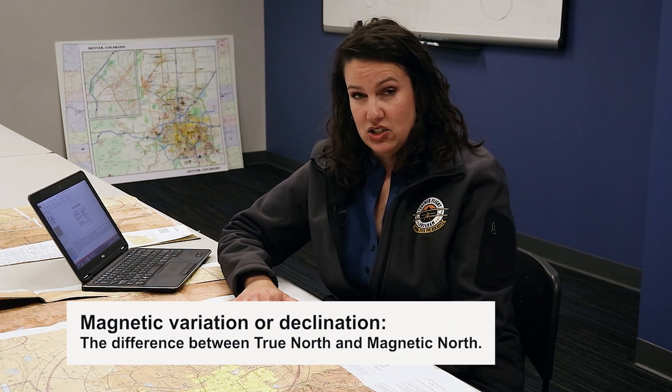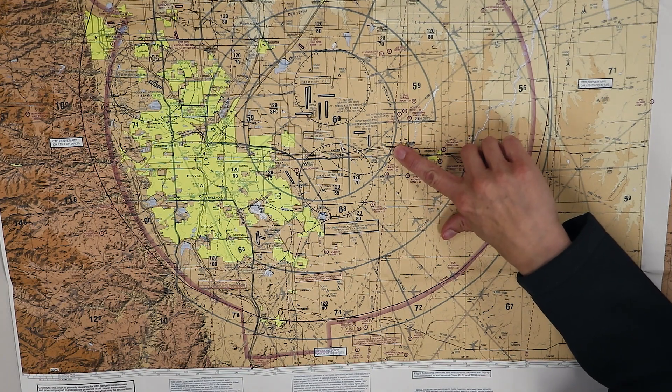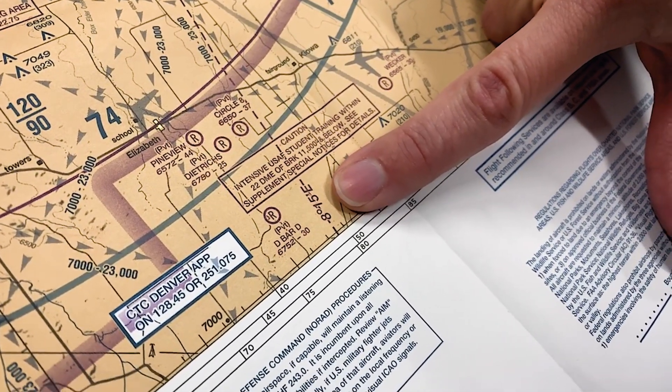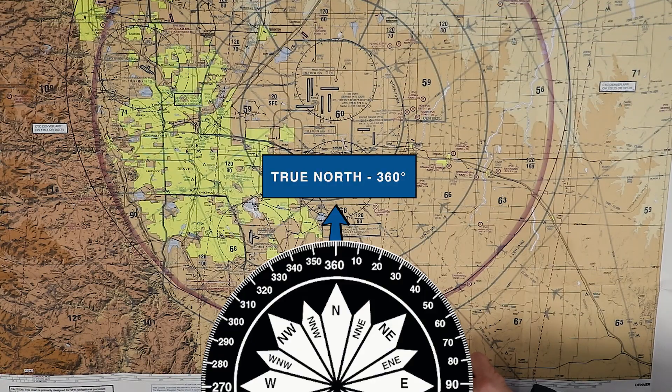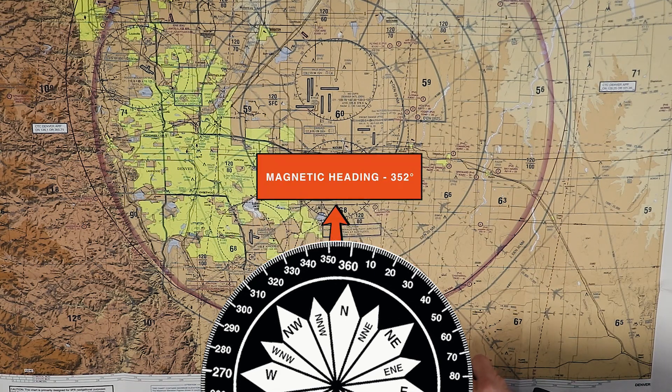The difference between true north and magnetic north is called variation or declination. If you look at our chart you can see a magenta segmented line — these are called isogonic lines, and they change depending on where you are on the globe. When referencing charts or maps we use true north, but pilots fly in reference to magnetic north using a compass, so their headings are always magnetic. For example, 8 degrees 15 minutes east means if our true course is 360 degrees, we subtract 8 degrees to get our magnetic heading.